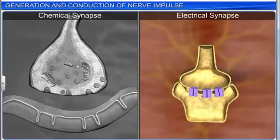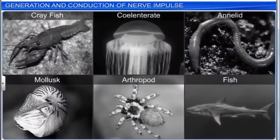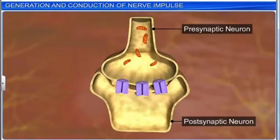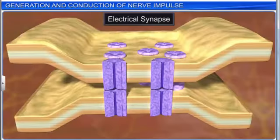Electrical synapses are the less common of the two types. They were first found in crayfish, later in coelenterates, annelids, mollusks, arthropods, and fish. The membranes of pre- and post-synaptic neurons of electrical synapses are in very close proximity.